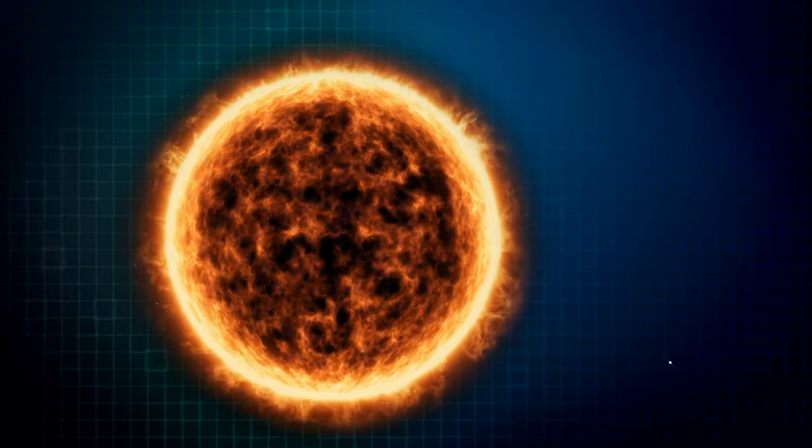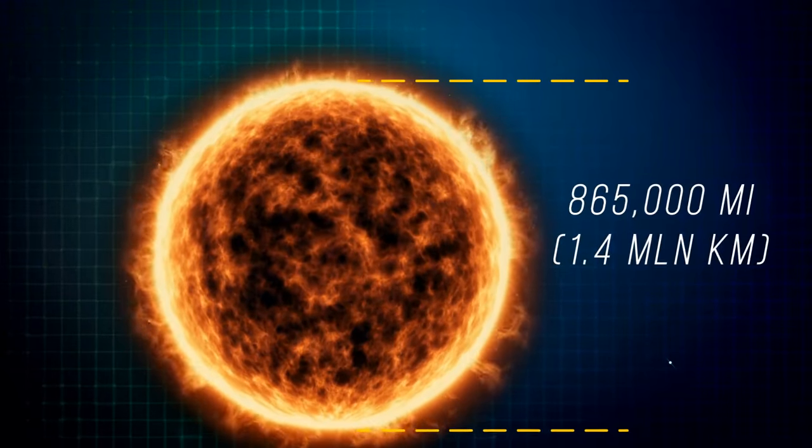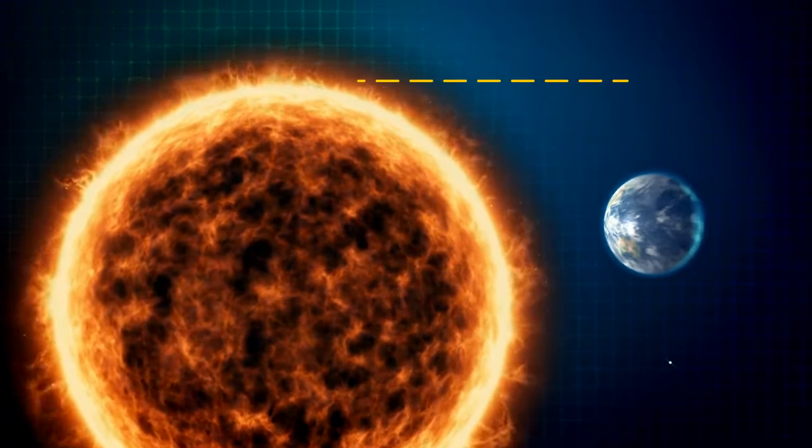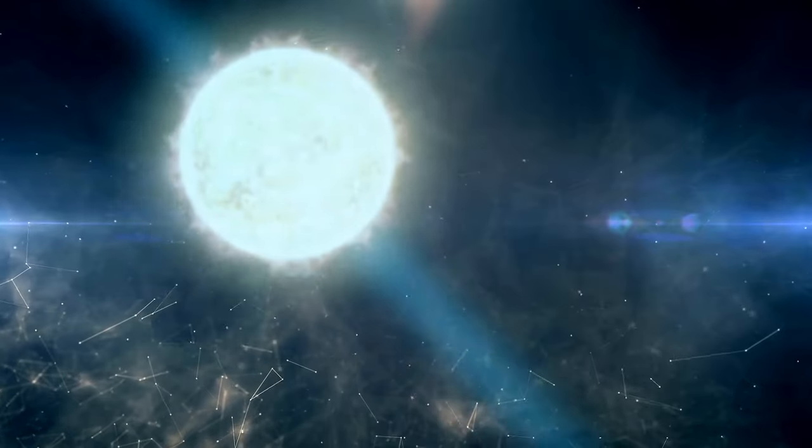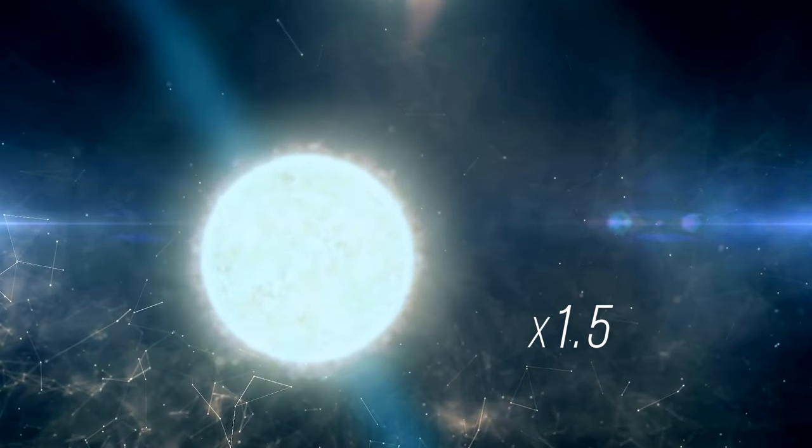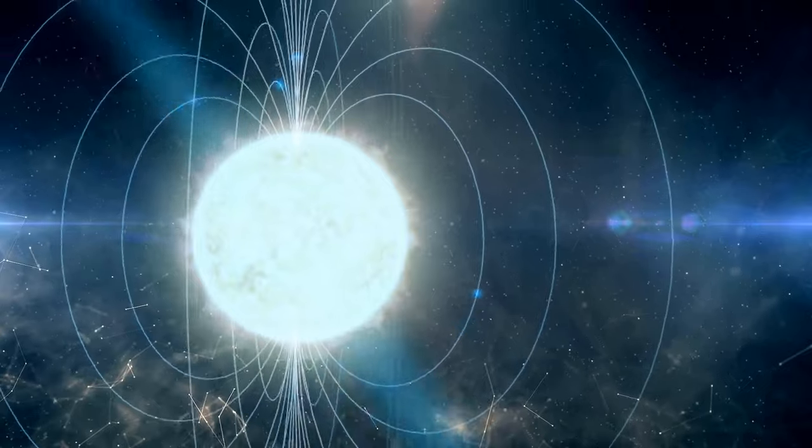For comparison, our Sun is almost 865,000 miles across, which is 109 Earths put side by side. But don't let this relatively tiny size fool you. Any neutron star is at least one and a half times heavier than our Sun, and has an intense magnetic field.